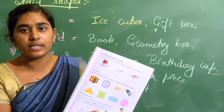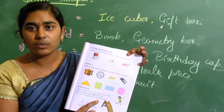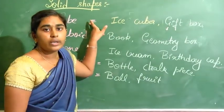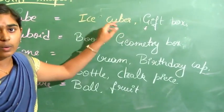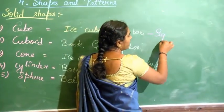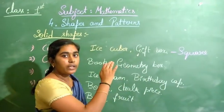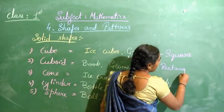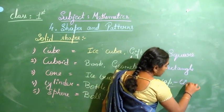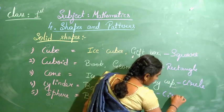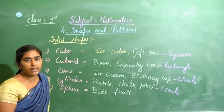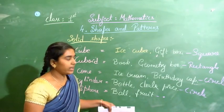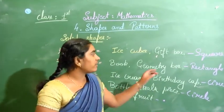Next, you have a tracing activity: keep an object and trace it on a page to see what shape you get. One side of a cube gives a square, one side of a cuboid gives a rectangle, a cone gives a circle, and a cylinder also gives a circle. You cannot trace a sphere — you will get only a very small circle or a dot.